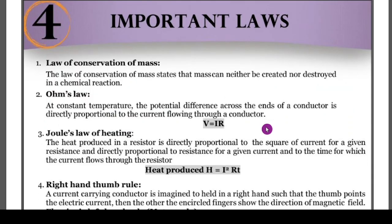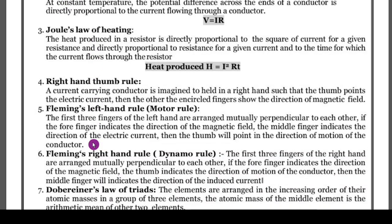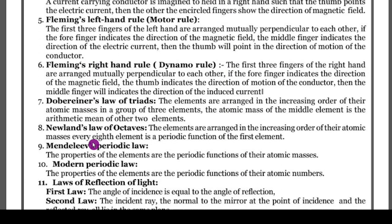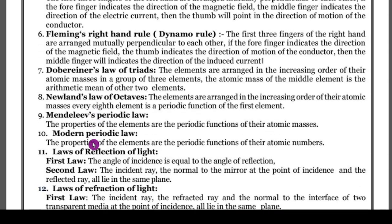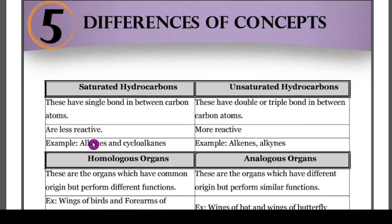The next concept is important laws. The important laws from your textbook are: law of conservation of mass, Ohm's law, Joule's law of heating, right-hand thumb rule, Fleming's left-hand rule (motor rule) and dynamo rule, Dobereiner's law, Newlands' law, Mendeleev's periodic law, and the modern periodic law. All the laws are given together.